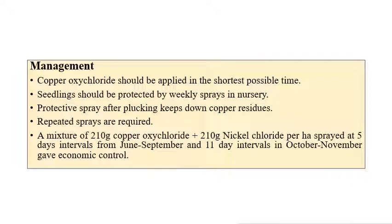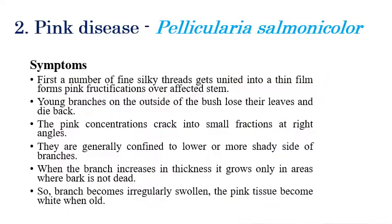Spraying is recommended specifically during June to September and October to November because these are rainy or light drizzling seasons. This disease is favored by low humidity and high rainfall — even average rainfall is suitable for disease development — so spraying at this time will effectively control it.